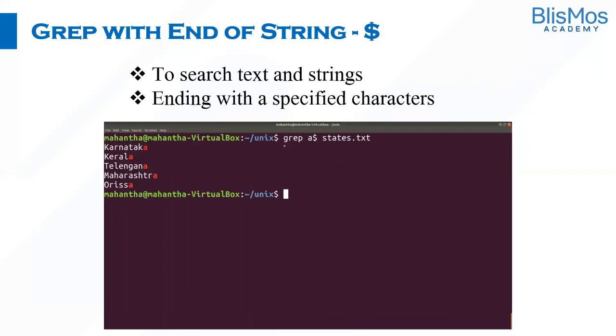Sometimes you have a use case where you want to search for a string ending with a particular character. That's when you can use dollar. If you look at how I'm using it here: grep, then 'a', then dollar, then the file name. With this, we're trying to search for strings ending with 'a'. You can see Karnataka, Kerala, Telangana, Maharashtra—all of them are ending with 'a'.